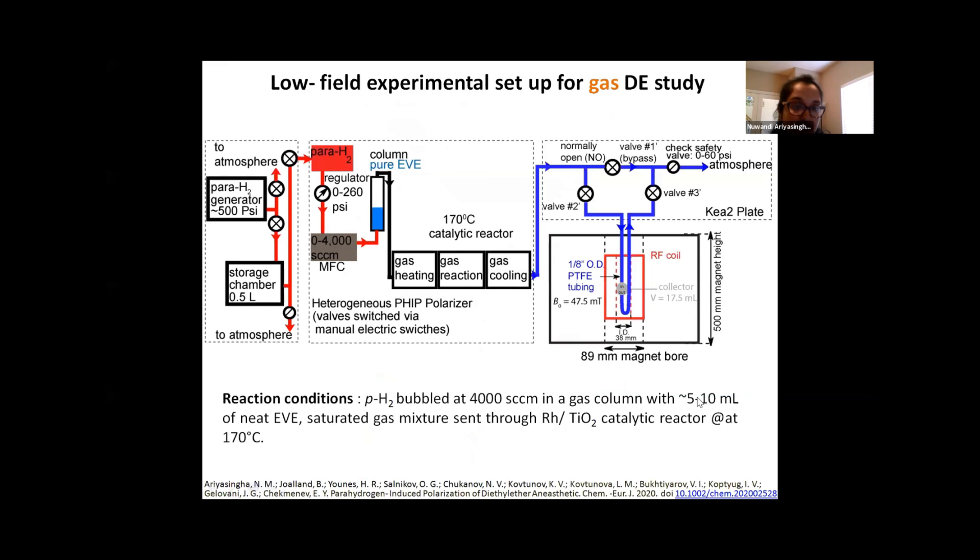Moving on to the gas-phase study, which was done in the low field. This is again very similar to the propane experimental setup that we used, which has a parahydrogen generator, the polarizer, and the spectrometer. The major difference here is in the polarizer section where you bubble the parahydrogen through the MFC into an HPLC column filled with neat EVE here. So in comparison with the propane setup, we all know that this is not a very stable setup, even though it is good for preliminary studies, which means this can change over time. So if one would want to measure the decay data, you would have to use a different approach.